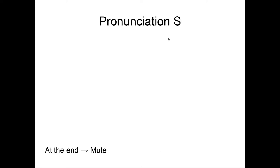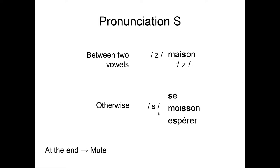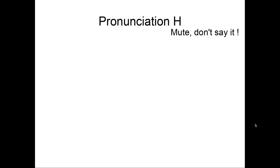The pronunciation of the S, when it's at the end, mute, don't say it. When it's between two vowels, it's pronounced Z, like in maison. And otherwise, it's pronounced S. Ça, moisson, espéré.